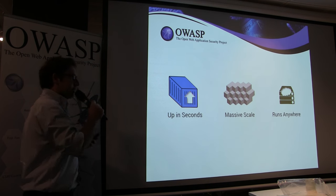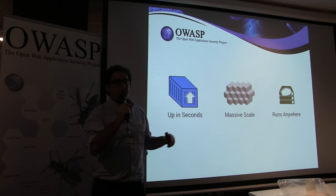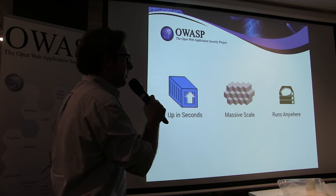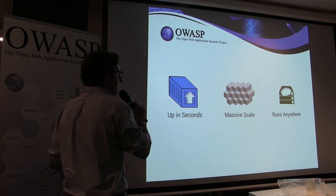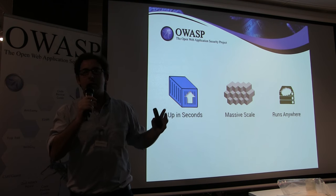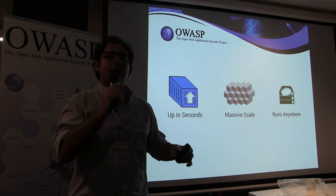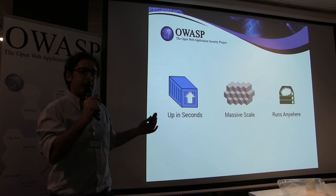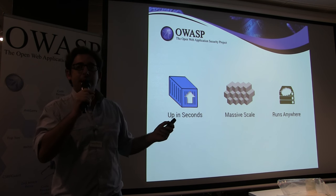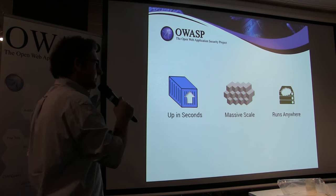The key reasons are: number one, you can spin up a container in seconds. They scale in a very big way and they run absolutely anywhere. The reason you can spin them up so quickly is that the average size of a VM is two or three gigabytes, while the average size of a container is just a few megabytes.